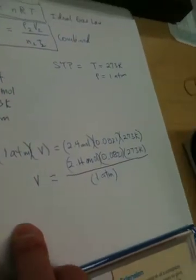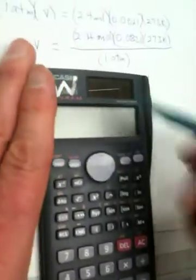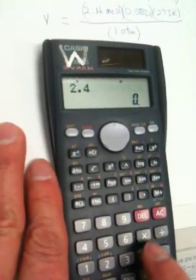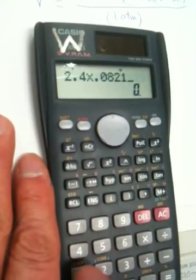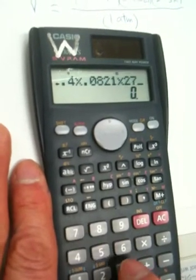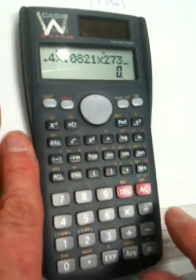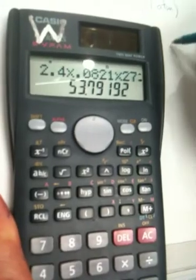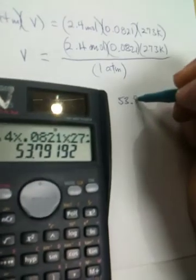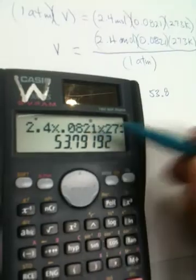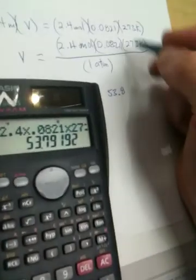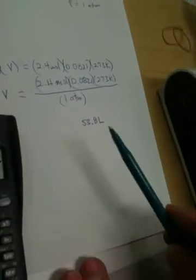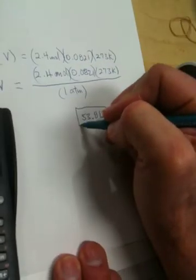Now, as we run our calculator, we're going to do the 2.4, and then we're going to multiply that by 0.0821. And then we're going to multiply that by 273. And we're going to divide by 1. We don't even need to worry about that. We can hit our equal key. And we come up with 53.8, which is what we round this to with three sig figs. And that's going to be a volume in liters.